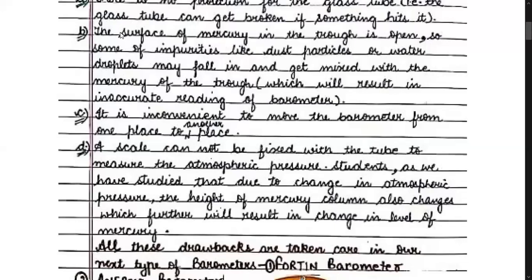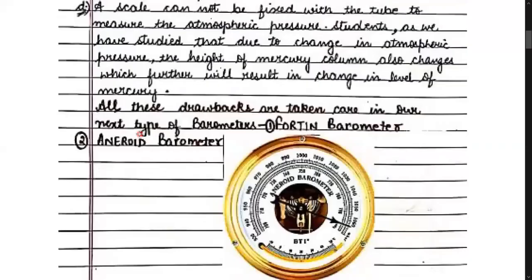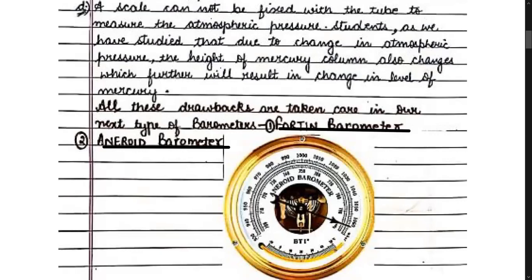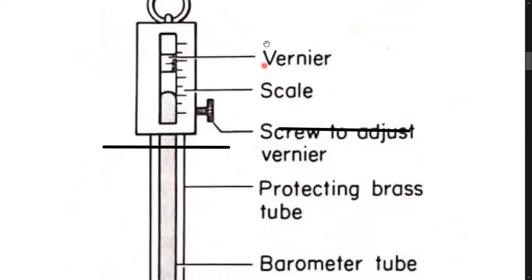All these drawbacks were covered in two further types of barometer. One is the Fortín barometer and the other is the aneroid barometer. You can see the diagram of the aneroid barometer - it comes in a dial form with different pressure readings written on it.